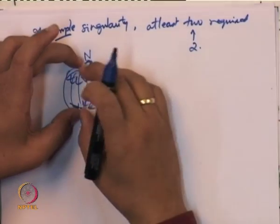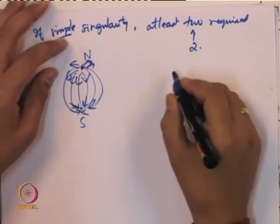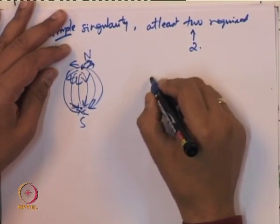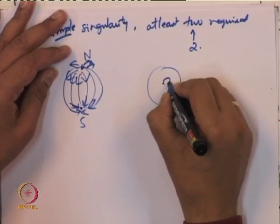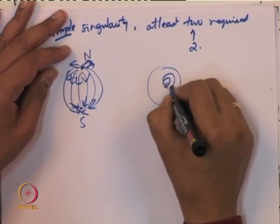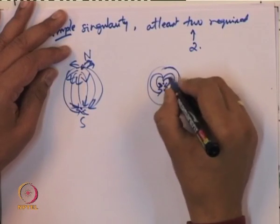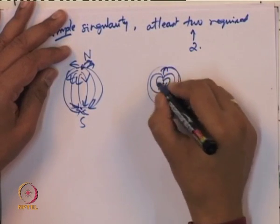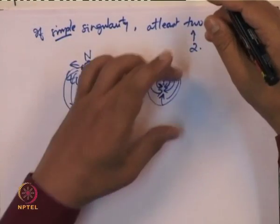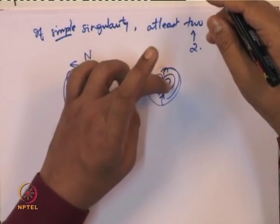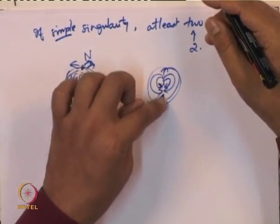One can also think of a non-simple singularity of index 2 defined on the sphere — a single singularity whose index alone sums to 2, consistent with the theorem.